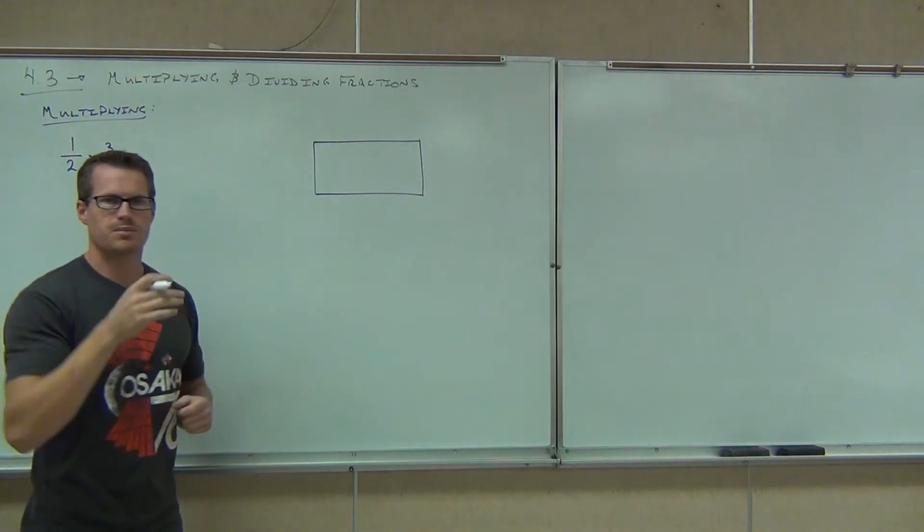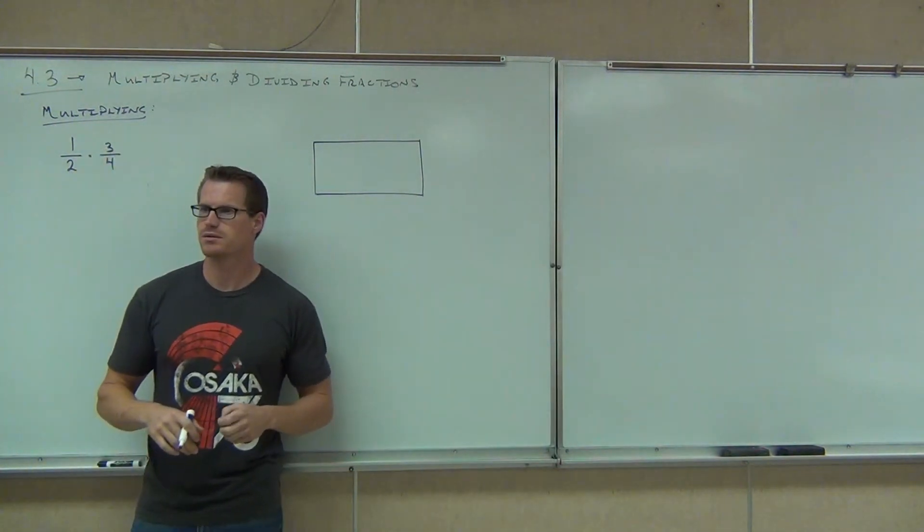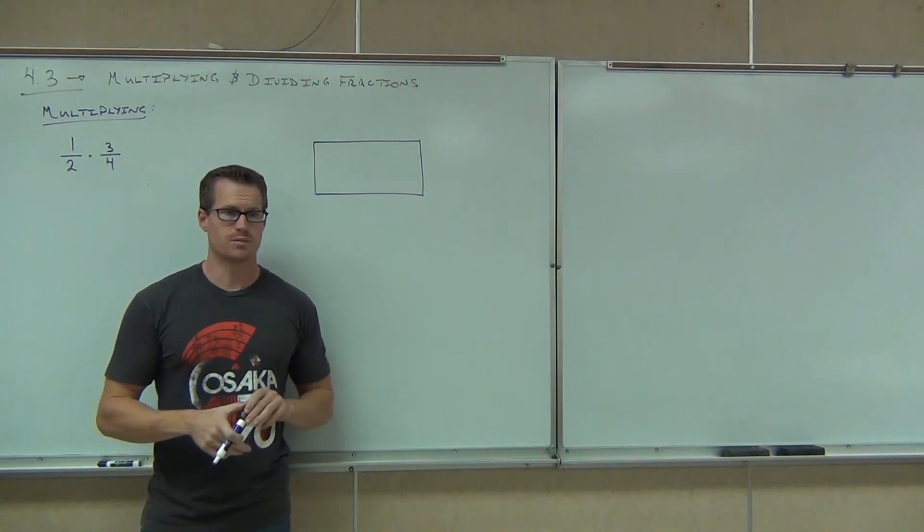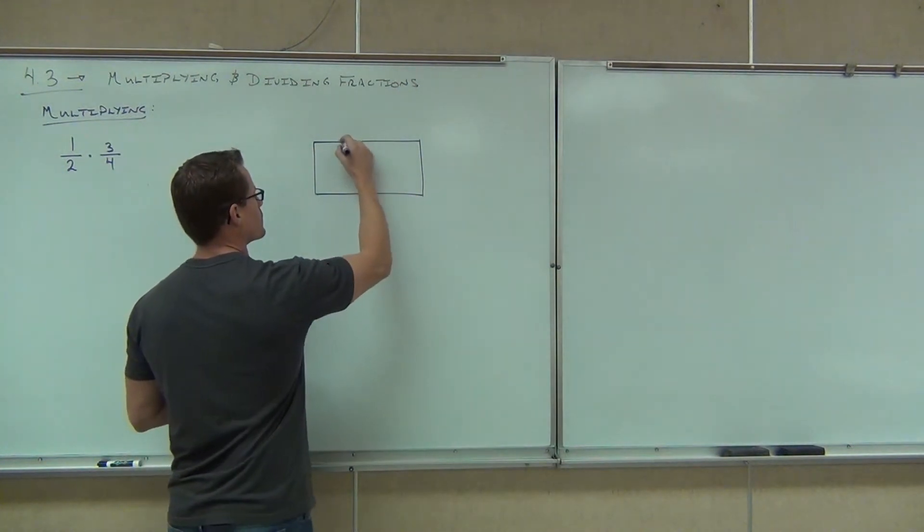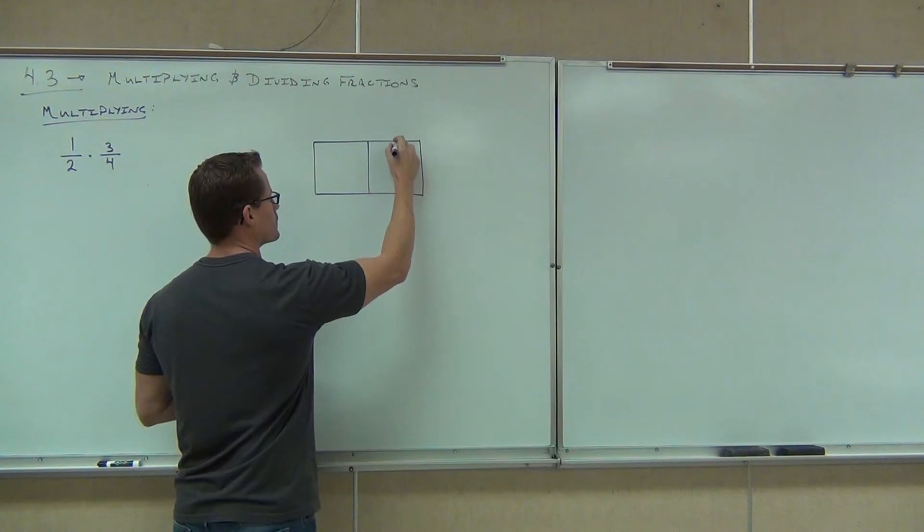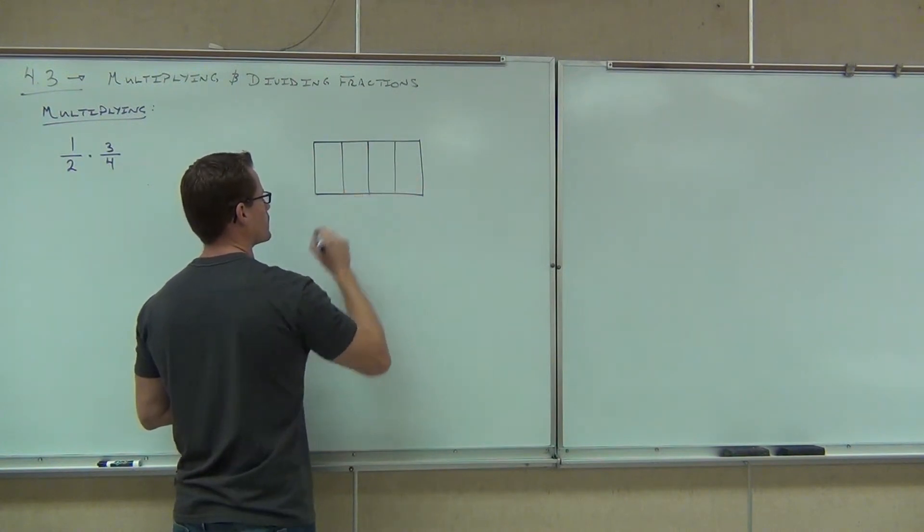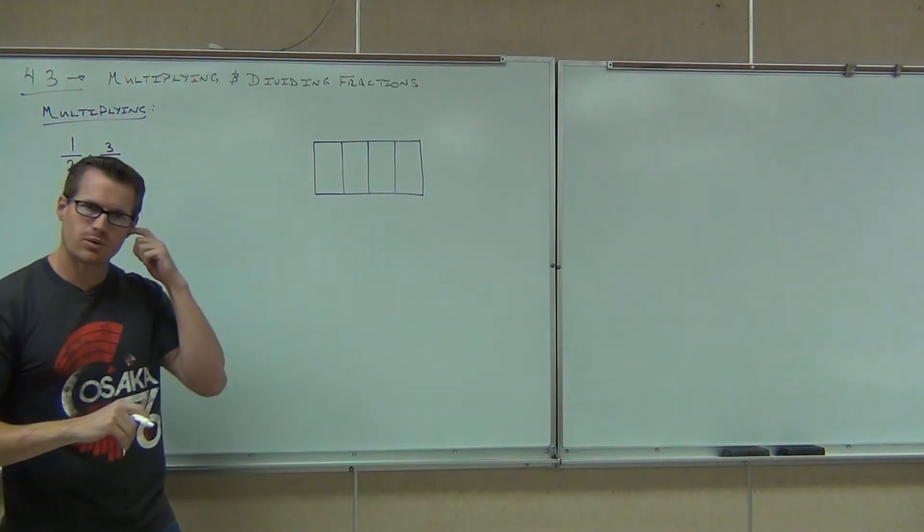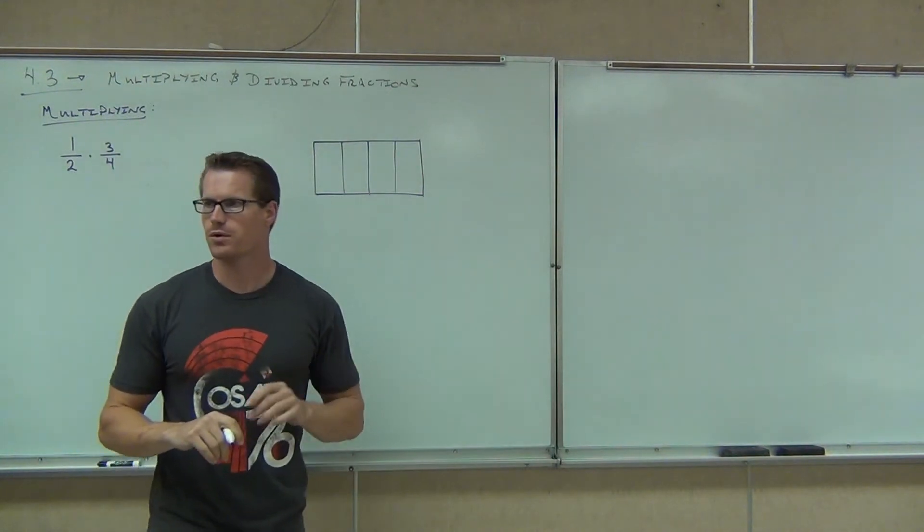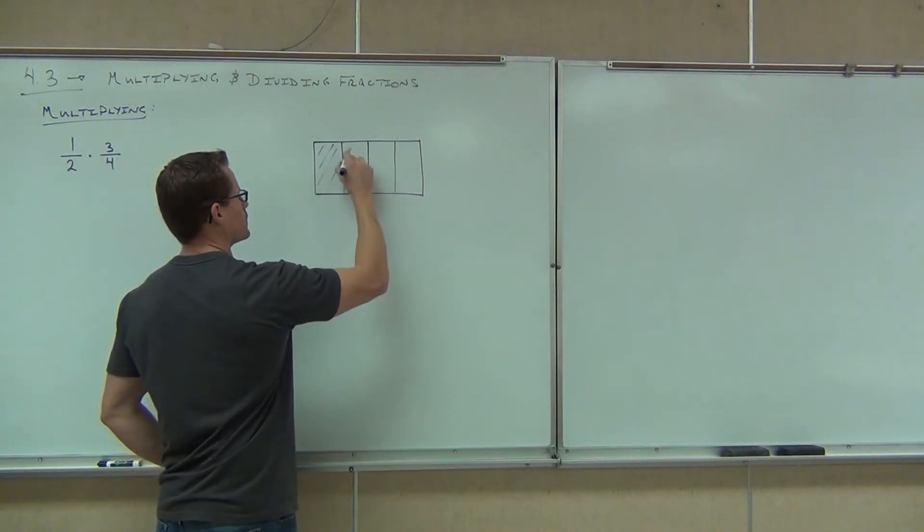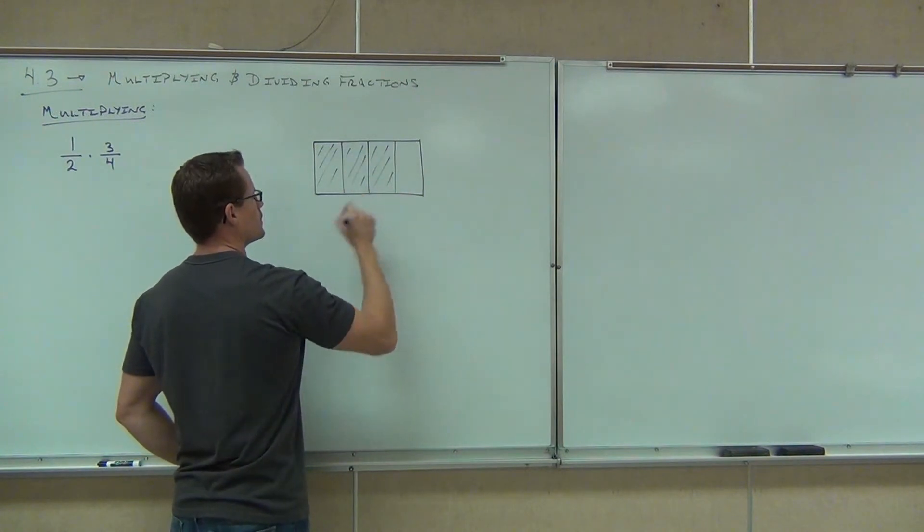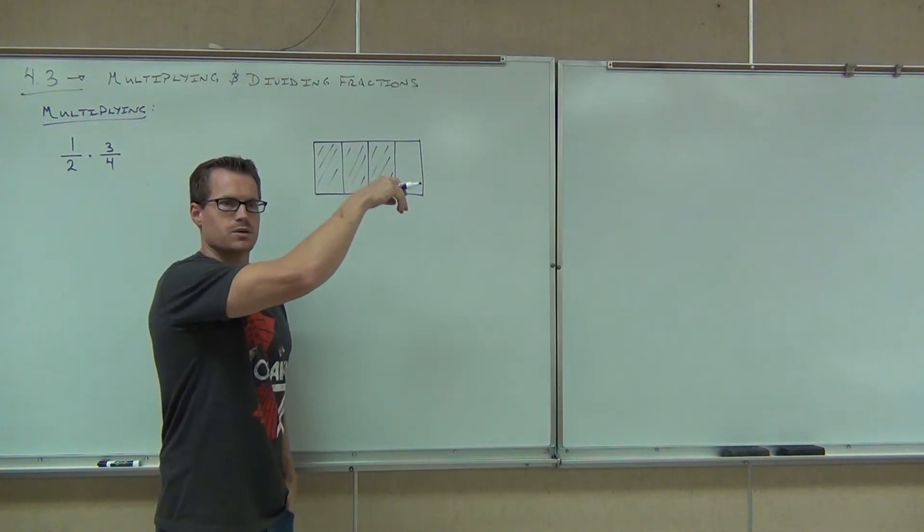What we're going to do is I'm going to draw a picture of 3/4. And then we're going to think about what 1/2 times 3/4 actually means. So, let's draw a picture first of 3/4. If I'm drawing 3/4, how many partitions do I need? Four. Good. Because the denominator is four, that means I'm cutting this into four segments. And how many do I shade if I'm talking about 3/4? Three. Would you all agree that this is 3/4? Yes.